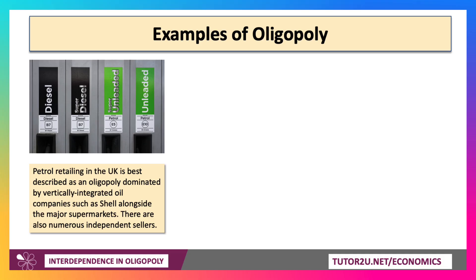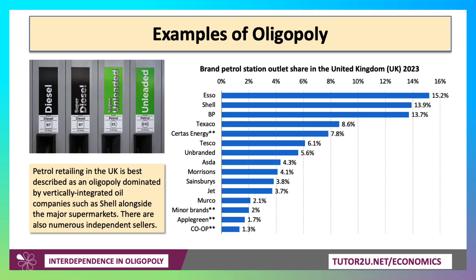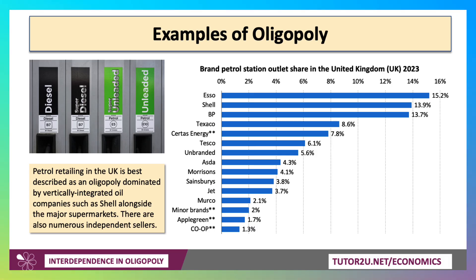So too, petrol retailing is best described as a concentrated oligopoly dominated by vertically integrated oil companies such as Shell, alongside of course the major supermarkets. You can see here that the likes of Tesco, Asda and Morrison's have sizable market share — they tend to buy their petrol and diesel from the wholesale market. But Shell, BP and Texaco are obviously dominating the industry.